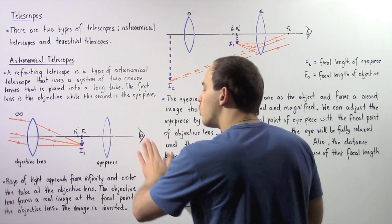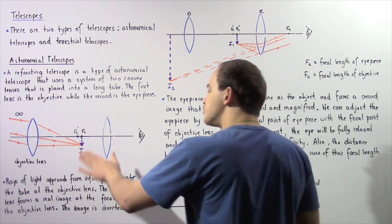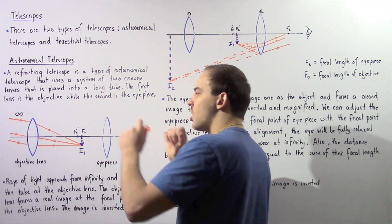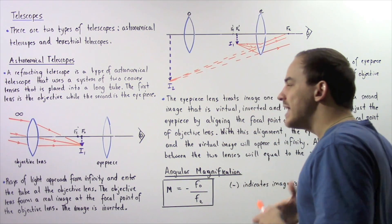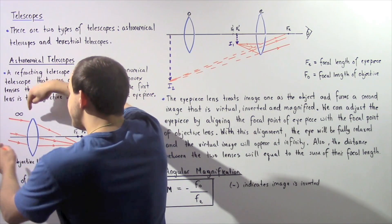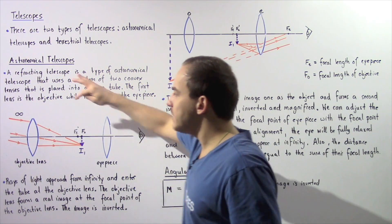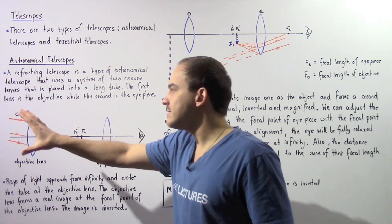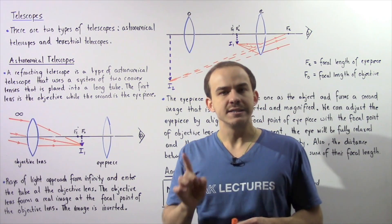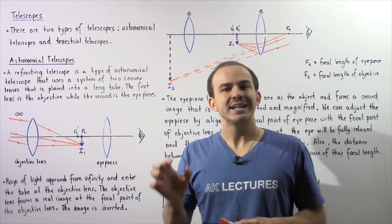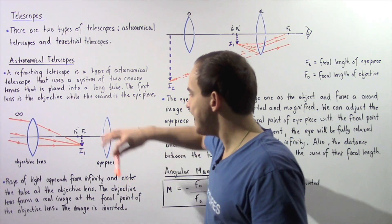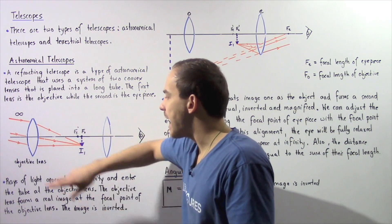Lens number two is known as the eyepiece lens because this is where we put the eye when we hold the telescope. Because the object distance is assumed to be infinitely large, if we use the thin lens equation, we see that the image distance — the place where the image is formed — is equal to the focal length of that lens.